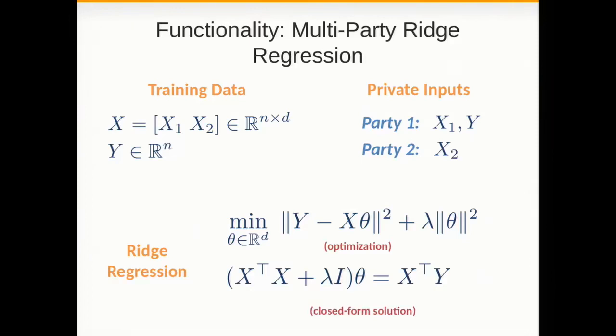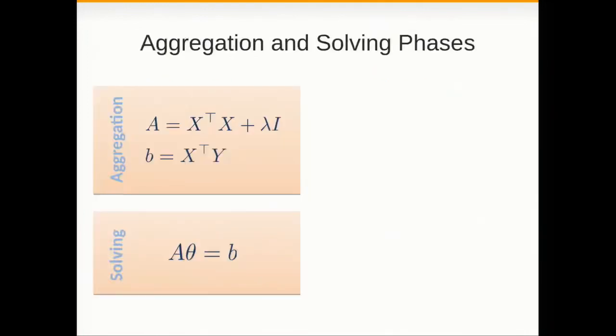All we need to do in ridge regression is very simple: solve this optimization problem that turns out has a closed form solution. So all we have to do is the parties have to compute this equation, construct this equation and solve it. This gives us this very nice split of the problem where we have an aggregation phase where the parties compute the matrix A and vector B, and a solving phase where they have to solve this system of equations and obtain the parameters of the model theta.